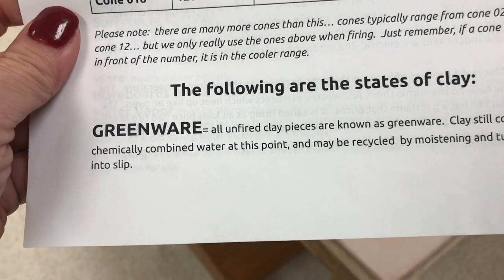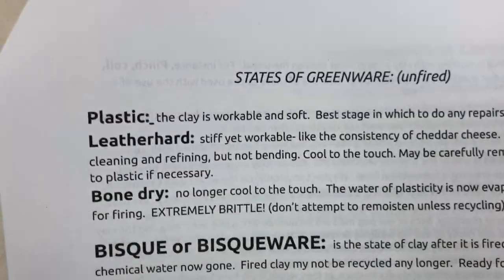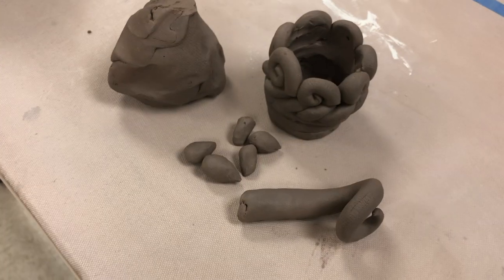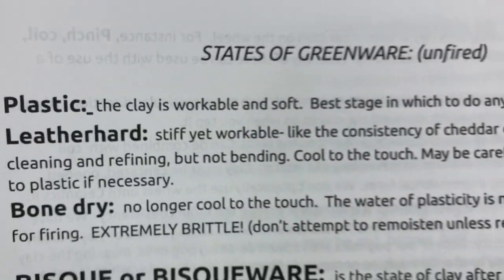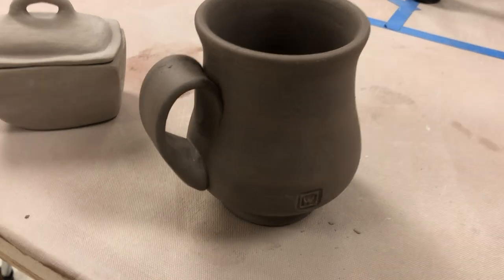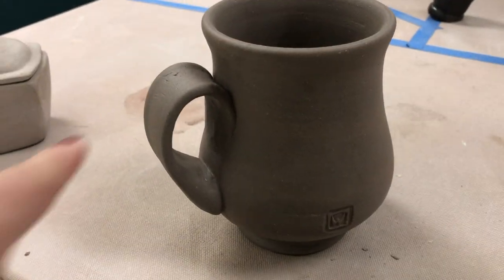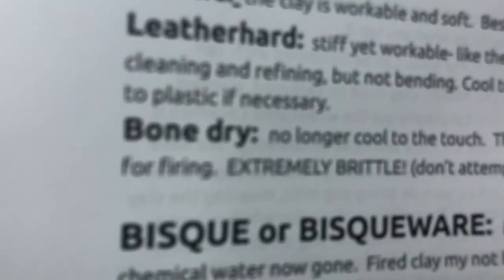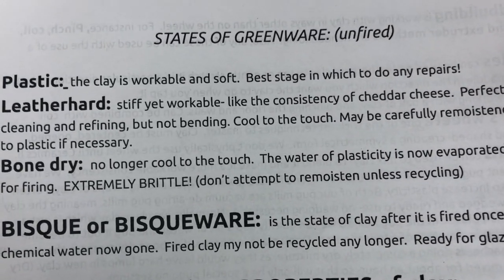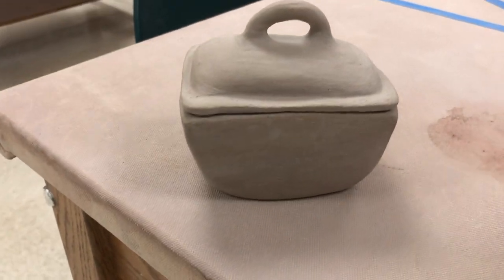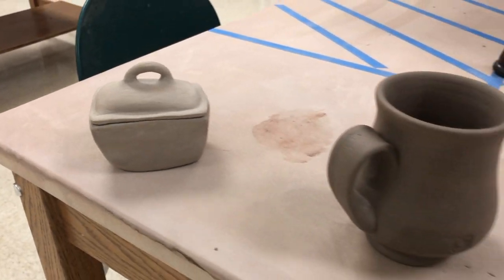Next are the states of clay. The first state is greenware — all unfired clay is known as greenware. Within greenware we have different stages. First is plastic: soft, workable, and bendable — the common building stage. Leather hard is next: stiff but workable, like the consistency of cheddar cheese. You can still add things to it. The third stage of greenware is bone dry: all water plasticity is gone, it is cool to the touch, and it is ready to be bisque fired.